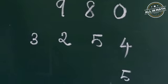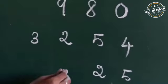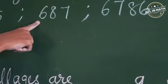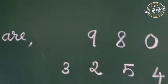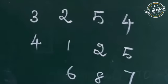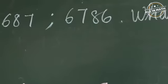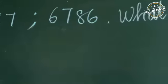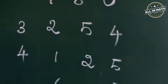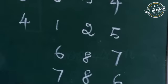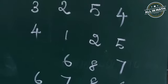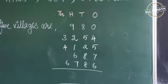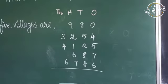The third village population is 4,125 — starting from the right side: 5, 2, 1, 4. And the next is 687: 7, 8, 6. The last number is 6,786: 6, 8, 7, 6. Now I am going to add all the numbers. I have written the place values on the top, so first we are going to add all the numbers in the 1's place.